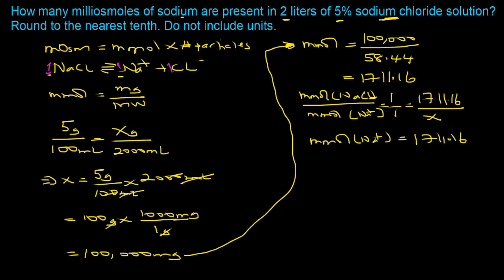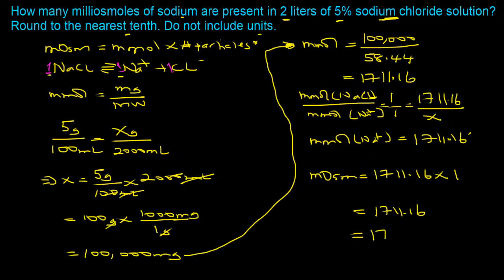Now we use the original equation: milliosmoles of sodium equals millimoles of sodium times number of particles. Sodium is a single ion, so that's 1,711.16 times 1, giving 1,711.16. Rounded to the nearest tenth and without units, the answer is 1,711.2. The take-home message is that this equation — milliosmoles equals millimoles times particles — combined with stoichiometry is the most convenient approach for these types of problems.